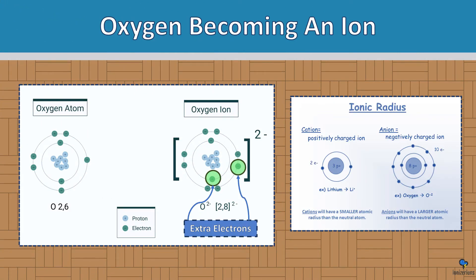Oxygen becoming an ion: as you can see in this image, oxygen receives two electrons. Why two? Because O2 means two atoms of oxygen. In the second image, ionic radius — you can see when an ion is positively charged it becomes smaller, and when it becomes negatively charged it becomes larger. That's because the electron is on the outer realm, and it just gives it a larger size.